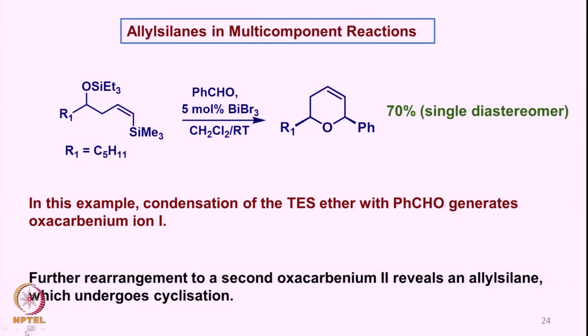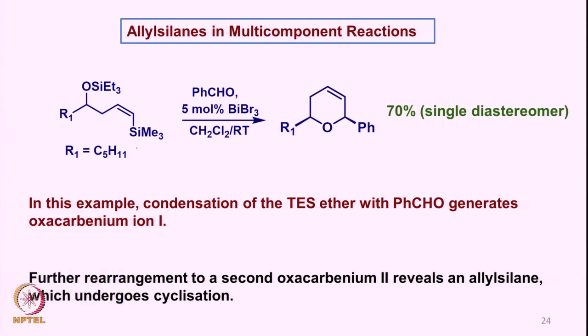So now we look at some more aspects of this allylsilane-based chemistry — allylsilanes in multi-component reactions. For example, if we take this particular substrate which is basically not an allylsilane but a vinylsilane — it is very interesting because now we have another moiety in the substrate, which is a triethylsilyl ether. This triethylsilyl ether reacts with an aldehyde in the presence of Lewis acid like bismuth tribromide in dichloromethane at room temperature.